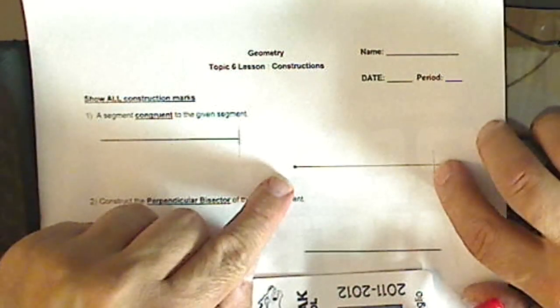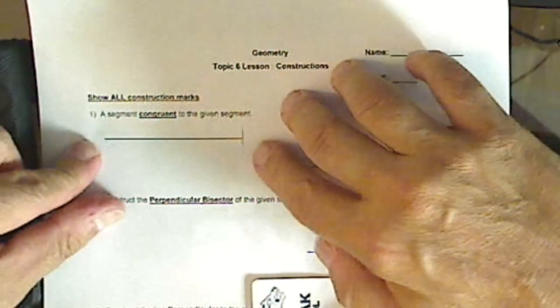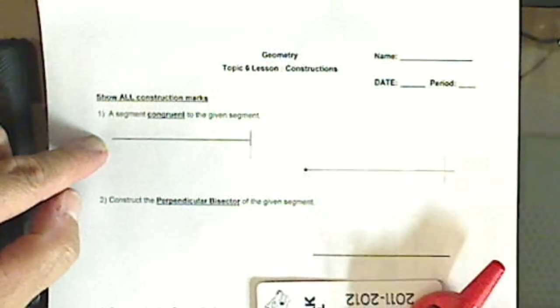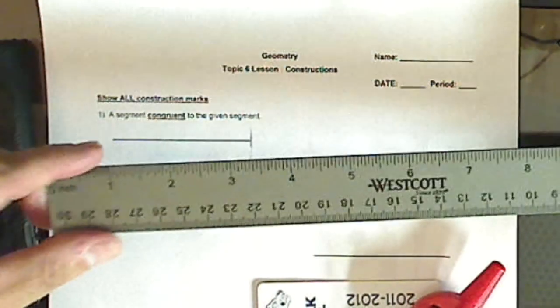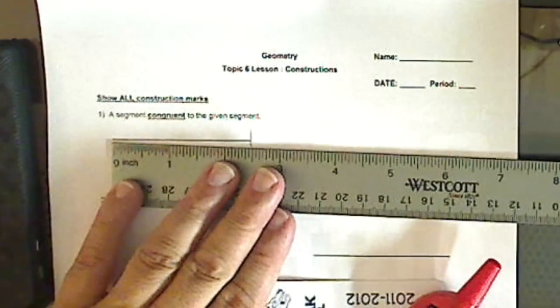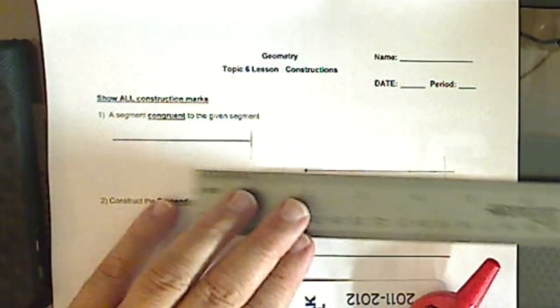Now, this, from this beginning to this end, is the same length as this segment right here. Now, of course, we have rulers, but construction does not use the markings of the ruler. You can use one to verify that I've done a pretty good job.